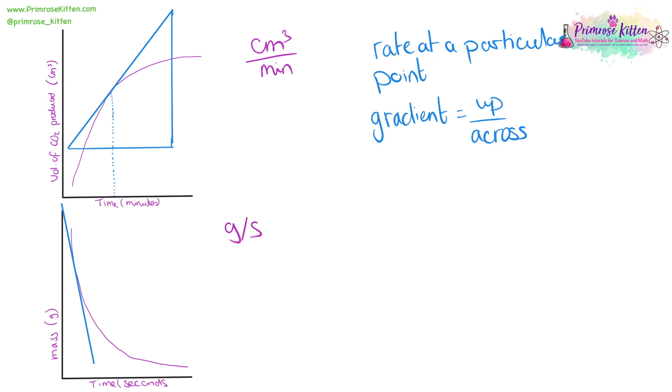You can compare the rates of reaction at different points in a reaction. For example, at the start of this reaction, our tangent is very steep. Whereas later on in the reaction, at a different point, our tangent is very shallow. Different rates of reaction at different points.